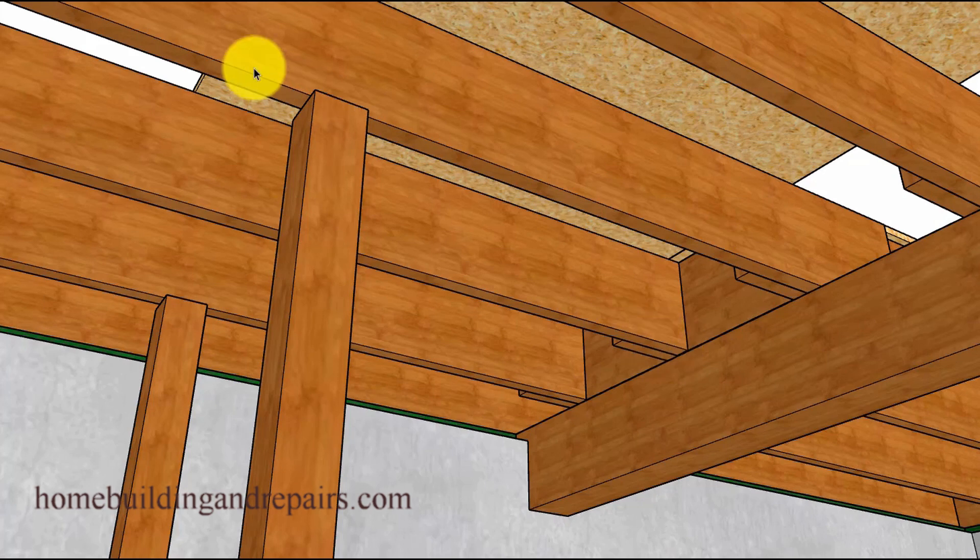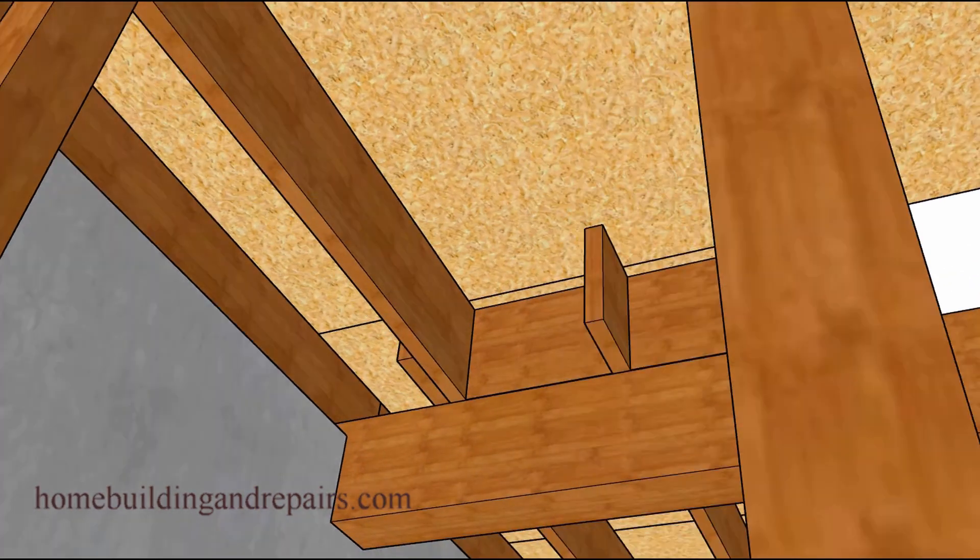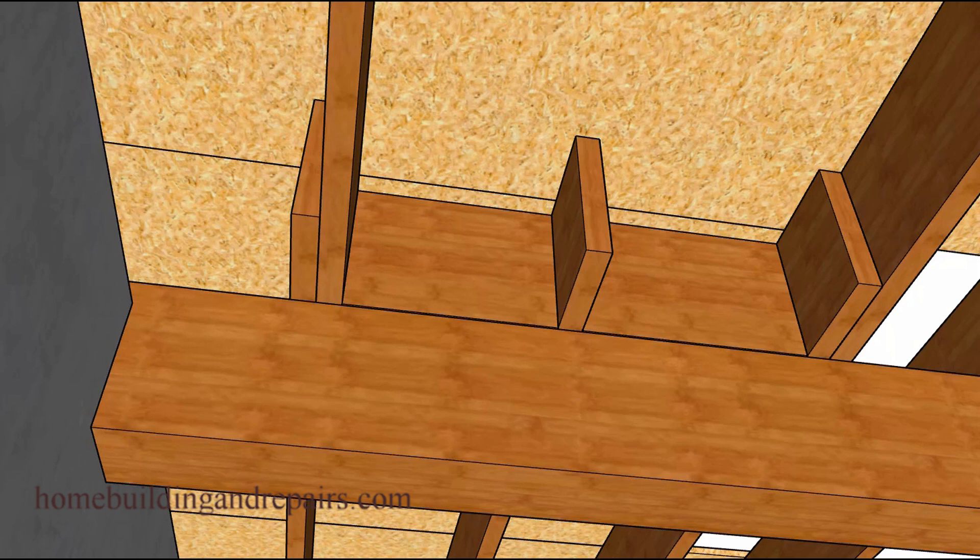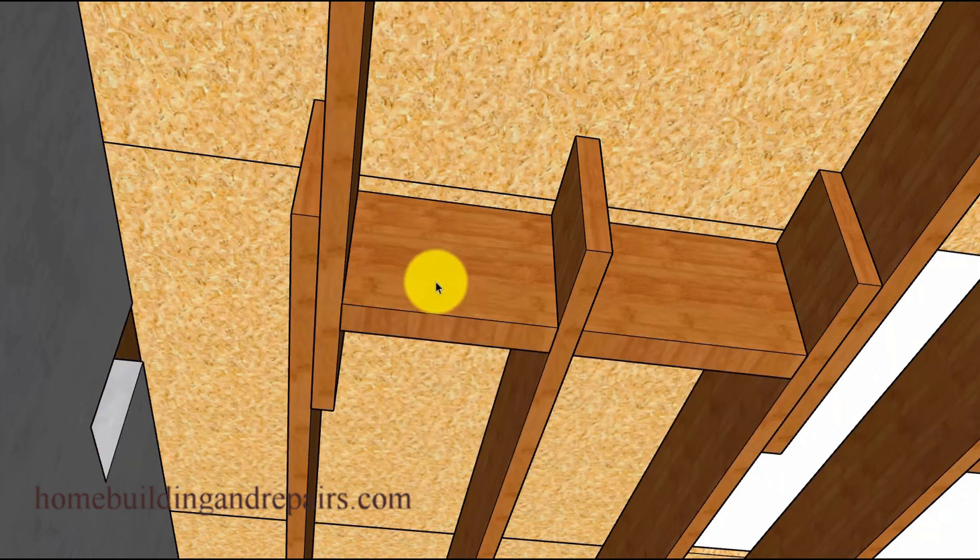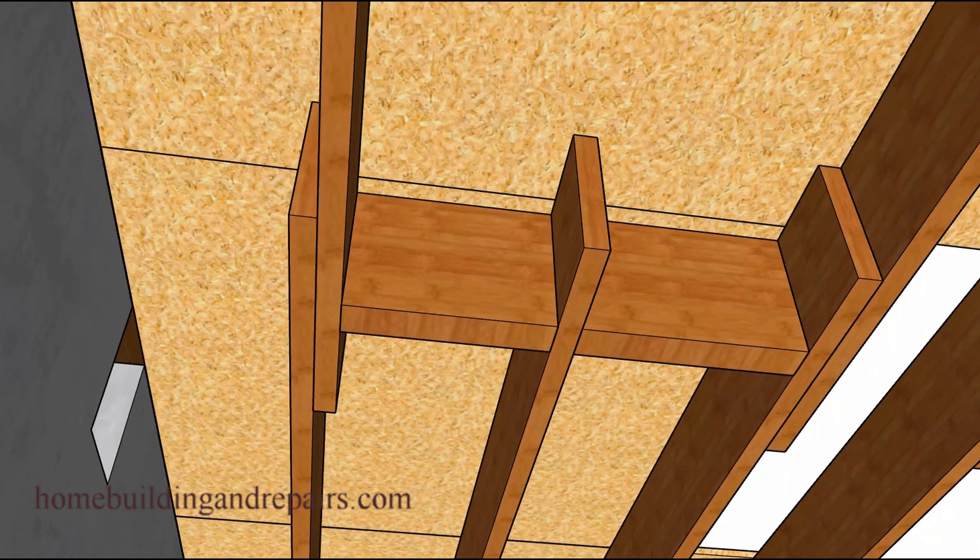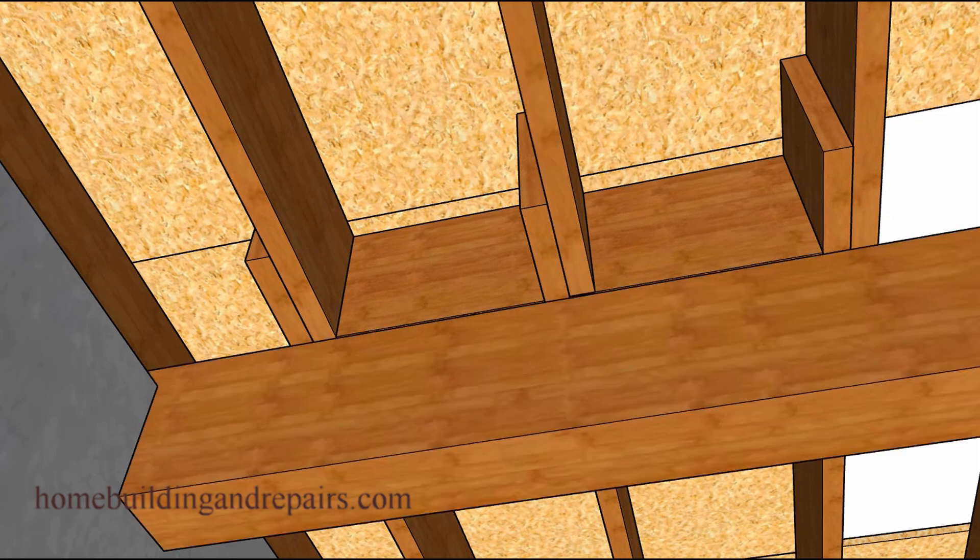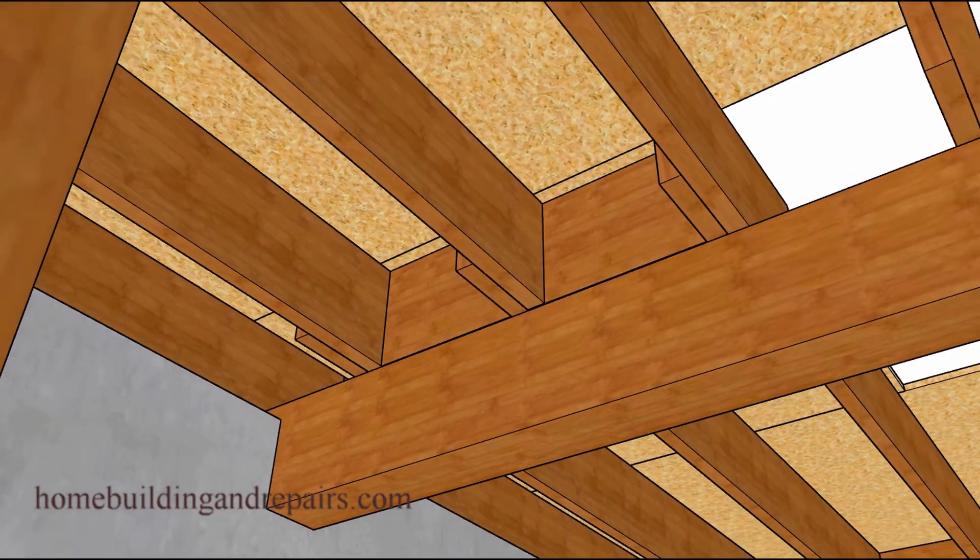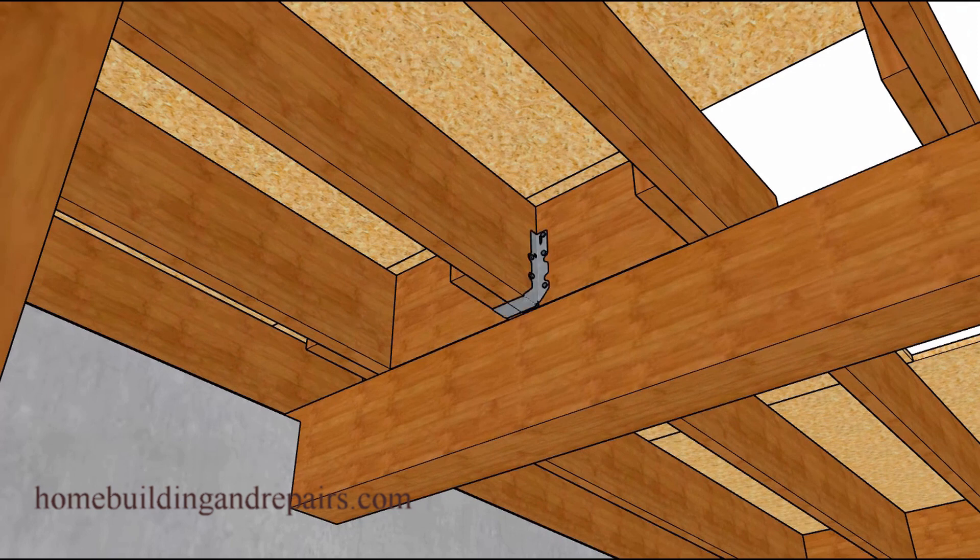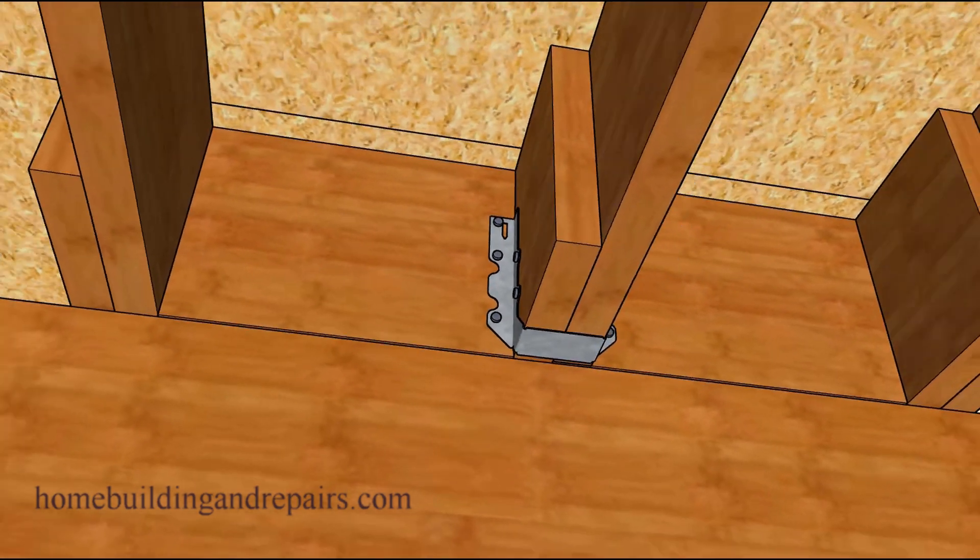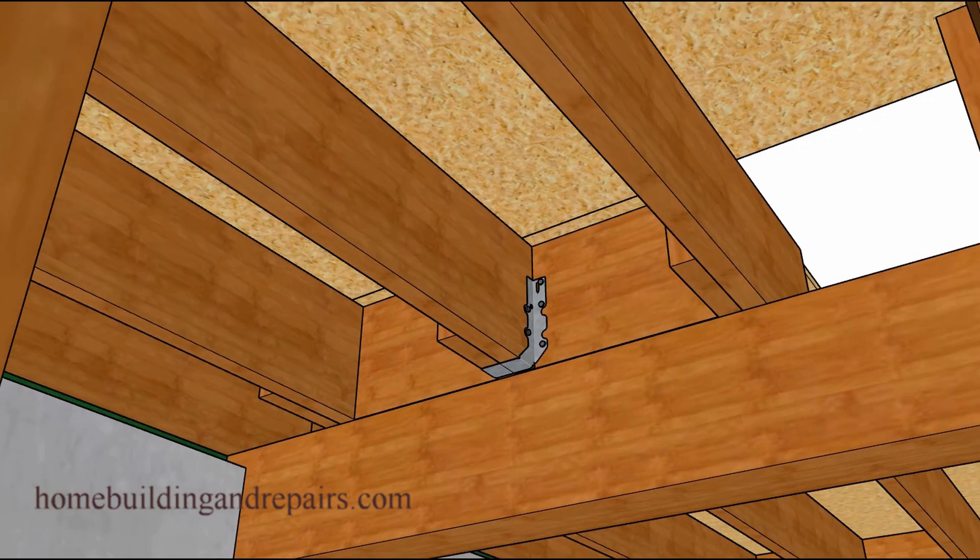But again, I need to point out that this might be a method that you won't be able to use for your project. Or it might require some type of structural engineering approval. So to make this method work, we're simply going to install some large blocks here that are going to sit on top of the load bearing beam and then raise our joist into position so that we can install a joist hanger like this that will support the weight and transfer it down to the beam or wall accordingly.